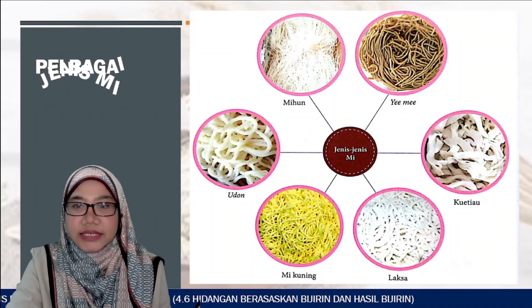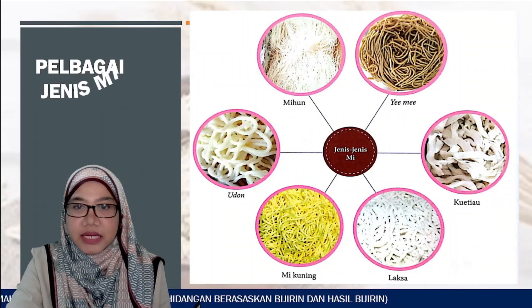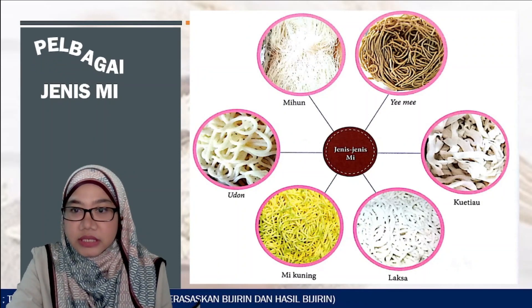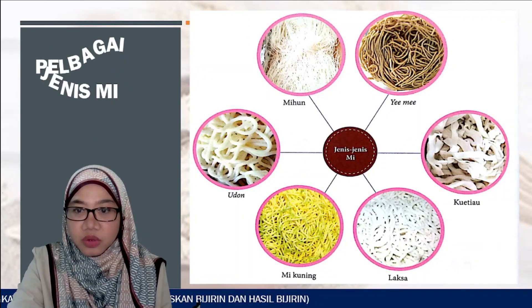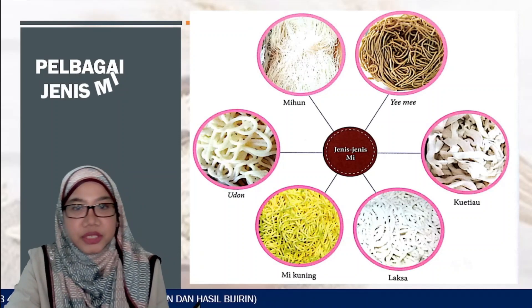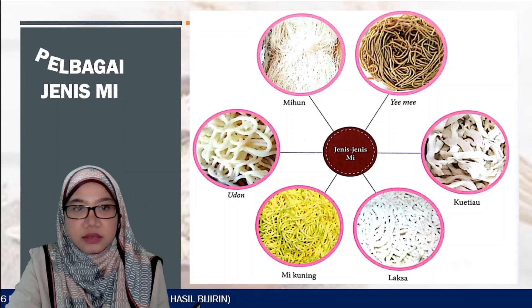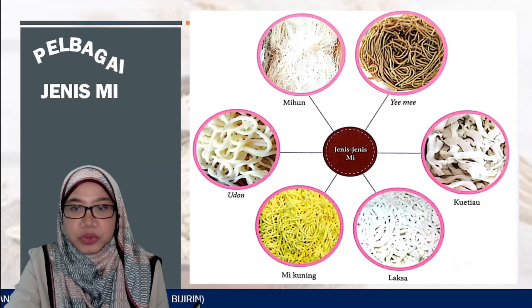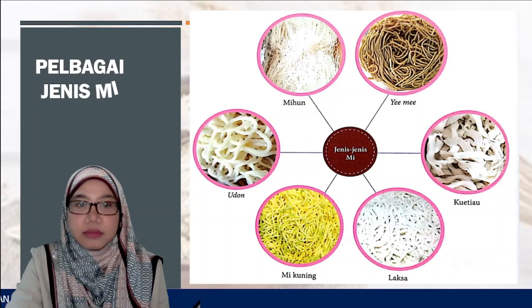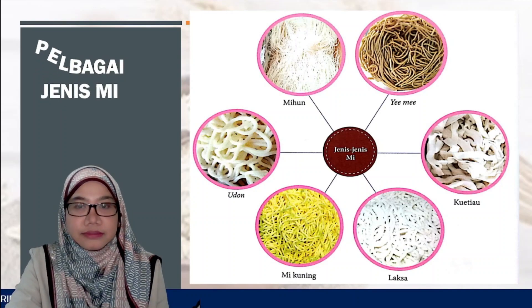Jenis-jenis mi ialah bihun, yimi, kuetiau, laksa, mi kuning dan udon. Mi-mi ini biasanya diperbuat daripada tepung beras.